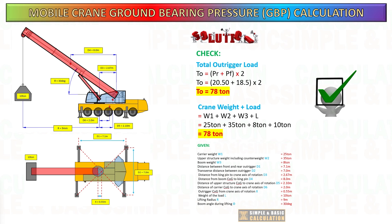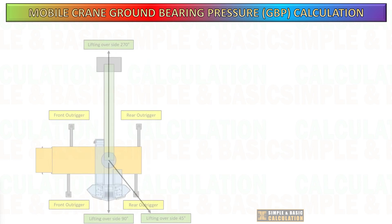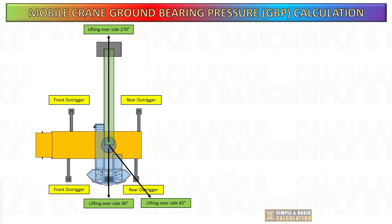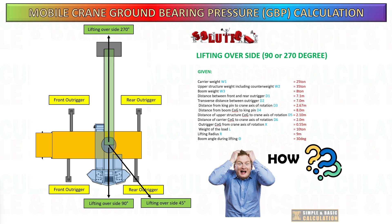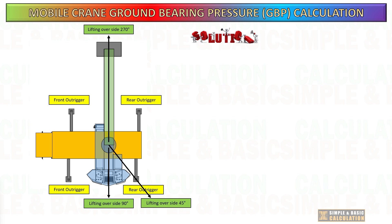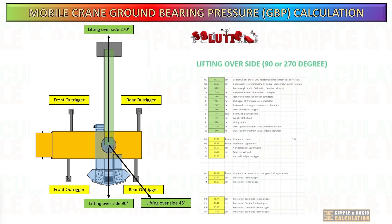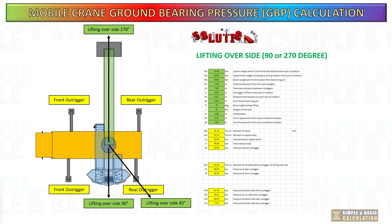Now, how about when the load is to be lifted at the side of the crane? As the crane swings the load horizontally, the distribution of weight across the crane's footprint changes. Depending on the swing angle, more of the load may be concentrated on certain outriggers while others bear less weight. The swing angle introduces additional forces on the crane superstructure, creating a load moment that can affect stability and change the distribution of forces on the outriggers. In the next video, I will show how to do this calculation when the lifting is over the side of the crane.